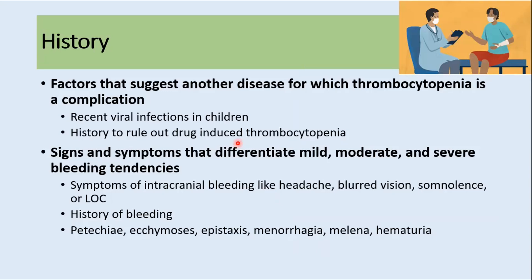For the diagnosis of ITP, we need to take a very detailed history. The history should focus on factors that suggest another disease for which thrombocytopenia is a complication, such as recent viral infections in children, recent use of drugs that can cause thrombocytopenia, and signs and symptoms that differentiate mild, moderate, and severe bleeding. We need to ask about headache, blurred vision, somnolence, or loss of consciousness if intracranial bleeding is suspected.